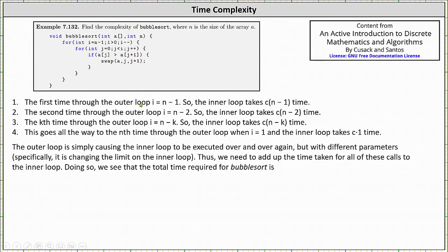The first time through the outer loop, i is equal to n minus one, so the inner loop takes c times the quantity n minus one time. The second time through the outer loop, i is equal to n minus two, so the inner loop takes c times the quantity n minus two time. The kth time through the outer loop, i is equal to n minus k, so the inner loop takes c times the quantity n minus k time.